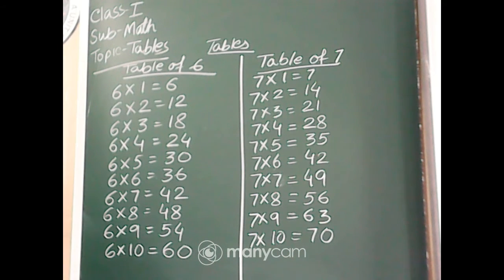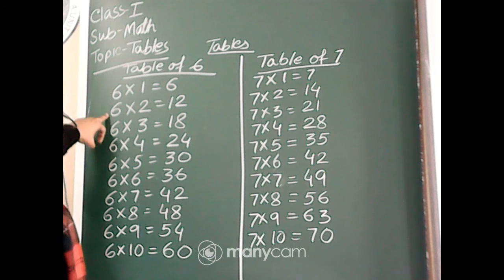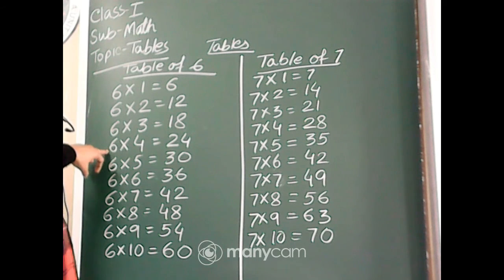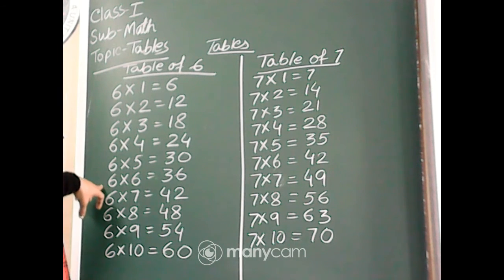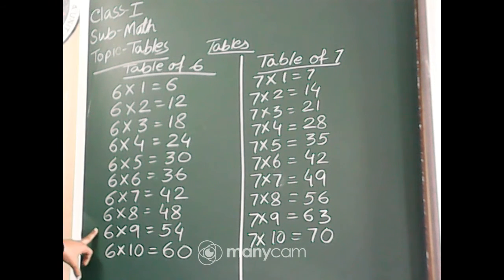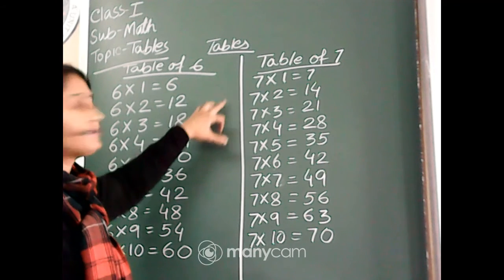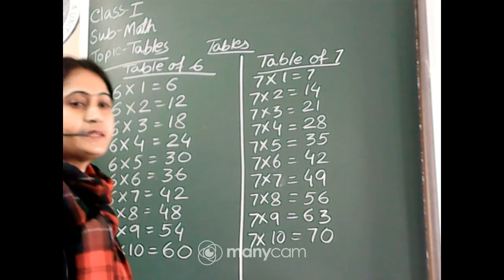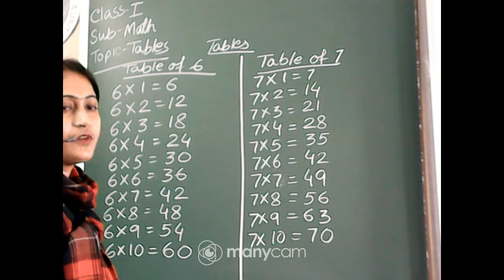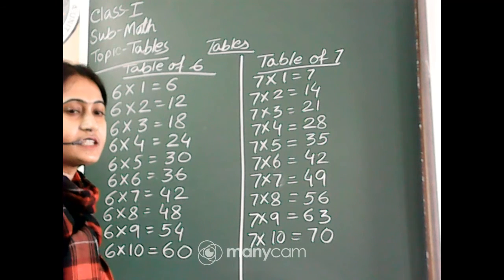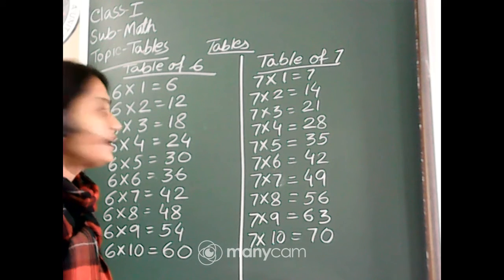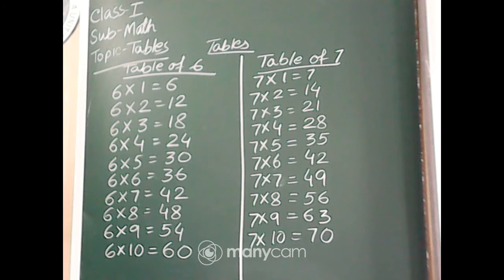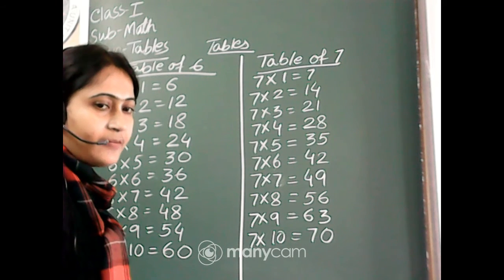In this manner you all will learn all the tables. 6 ones is 6, 6 twos are 12, 6 threes are 18, 6 fours are 24, 6 fives are 30, 6 sixes are 36, 6 sevens are 42, 6 eights are 48, 6 nines are 54, 6 tens are 60. 7 ones is 7, 7 twos are 14, 7 threes are 21, 7 fours are 28, 7 fives are 35, 7 sixes are 42, 7 sevens are 49, 7 eights are 56, 7 nines are 63, 7 tens are 70. I hope you all have completed table 6 and 7.